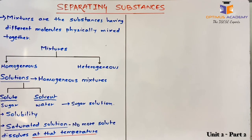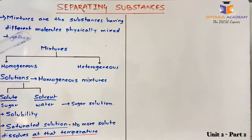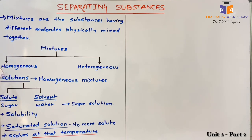Hello dear students. In this video we are going to discuss about the second unit of IGCSE chemistry, that is separating substances. We know about mixtures — mixtures are substances having different molecules physically mixed together without any chemical reaction between them. These mixtures are further classified as homogeneous and heterogeneous.